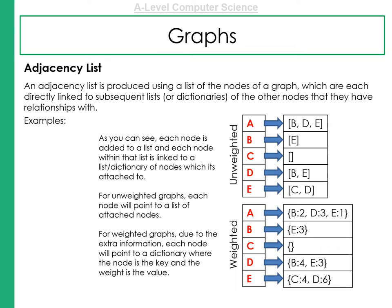Each are directly linked to the subsequent links. And we can actually use dictionaries to store these data types as well. So you can see unweighted and weighted examples here. And it shows the relationships that they've got. So each node is added to a list. And each node within the list is then linked with either a list or a dictionary to the nodes it's attached to.